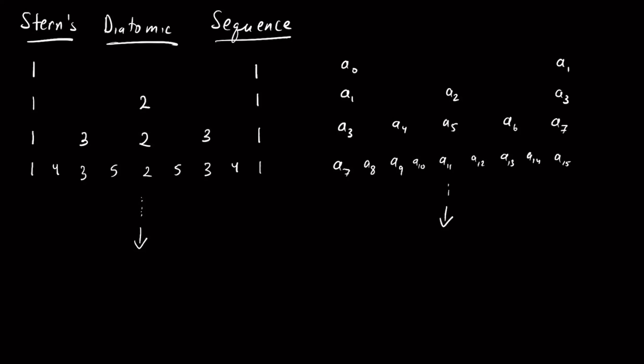The terms that appear in each column just repeat. So A0 is the same as A1, A3, A4. A1 is the same as A3, A7, A15. A2, A5, A11 are all the same. A4 and A9 are the same. A6 and A13 are the same. We have to ask ourselves where these terms come from: A4 comes from adding A2 and A1, and A6 comes from adding A2 and A3.